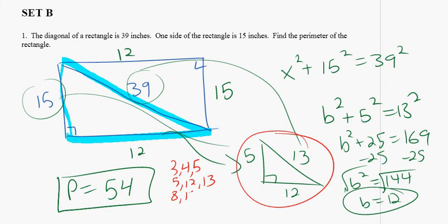We have 8, 15, 17. And we have 7, 24, 25. These are called Pythagorean triples. They're sets of whole numbers that work perfectly with the Pythagorean theorem. Sets of whole numbers that will create right triangles.